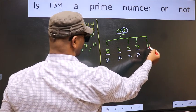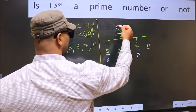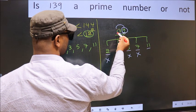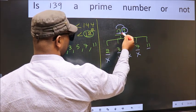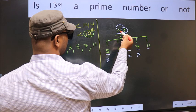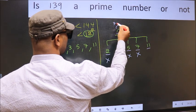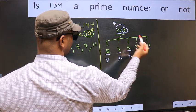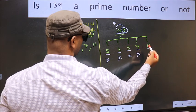Next number 11, to check divisibility by 11, you add alternate numbers. 1 plus 9, 10. Subtract from this, 10 minus 3, 7. 7 is not divisible by 11, so this number also not divisible by 11.